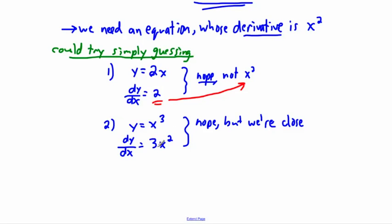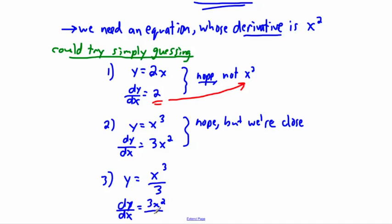A lot of people think: if only we didn't have the 3 — how could we get rid of that 3? Well, we could divide by 3 to begin with. Check this out — this is actually a bit clever. If I just divide by 3, taking the derivative brings the 3 in front, but we still have the divided by 3, so they cancel each other out. So y equals x cubed over 3 works!